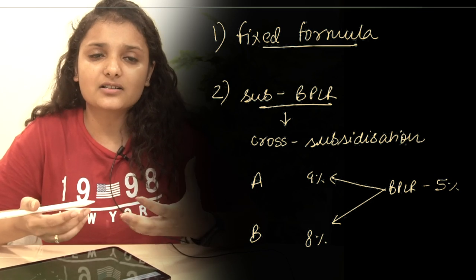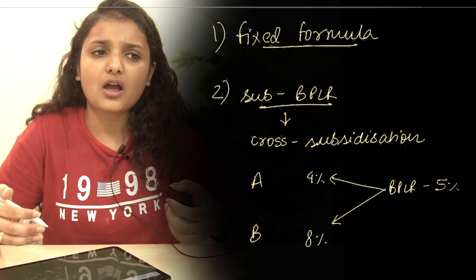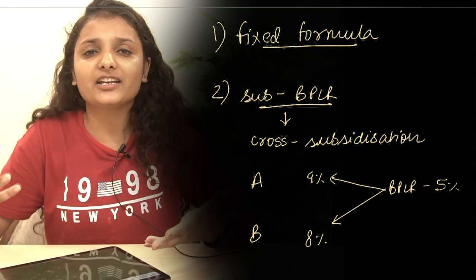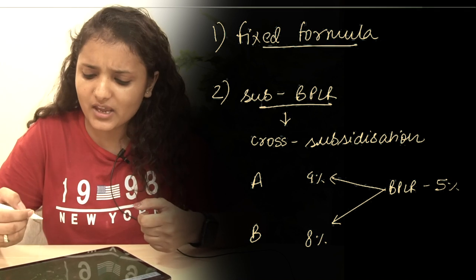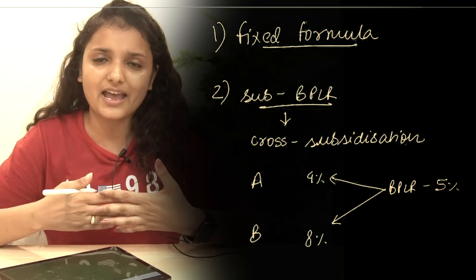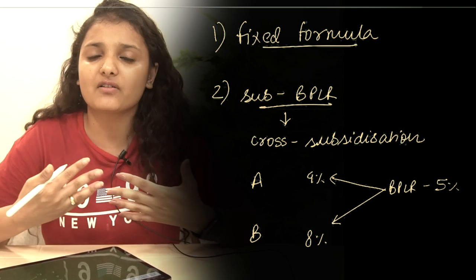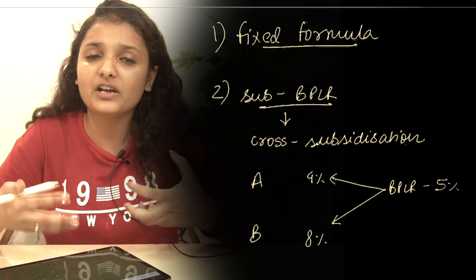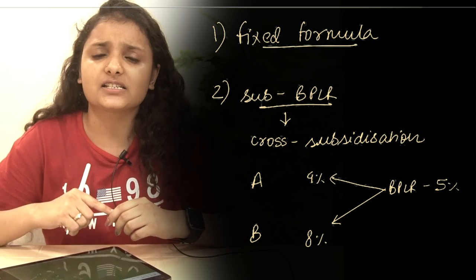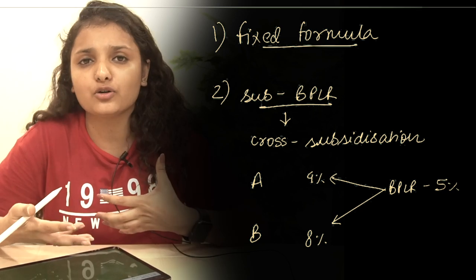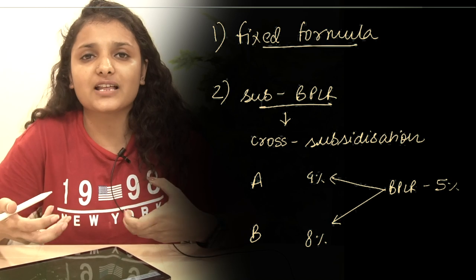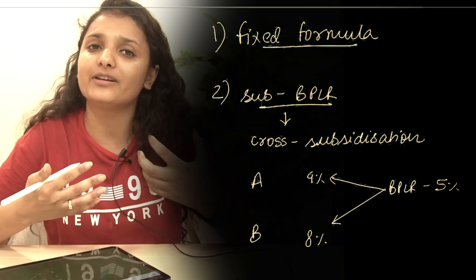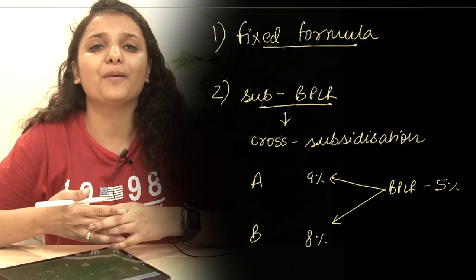The RBI's objective is to have a direct correlation between the repo rate changes and the bank interest rate changes. But under the BPLR system, different rates for different customers existed, loans were given at sub-BPLR rates, and cross-subsidization was happening. So the main purpose of the RBI was defeated. Hence there was a need to switch to another interest rate system, and in June 2010 the base rate system replaced the BPLR system.